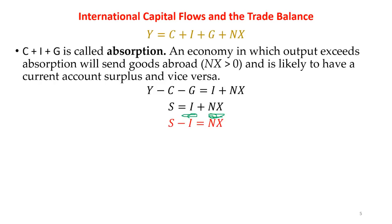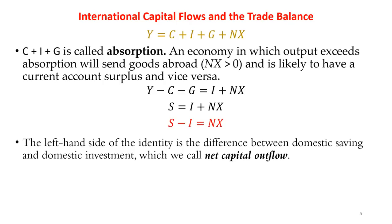Rearranging this equation, the left-hand side of this identity is the difference between domestic saving and domestic investment. The right-hand side is net exports, which is also called the trade balance. This equation shows that net capital outflow is equal to the trade balance.